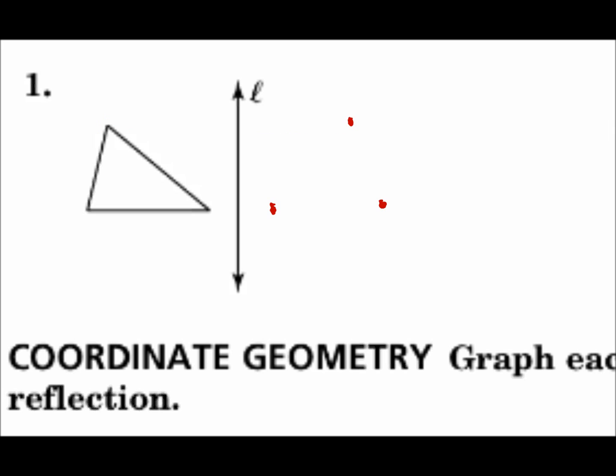Now you've got your three points. Go ahead and connect the dots. And you now have a mirror image of the first triangle. Remember, the first one is the pre-image. And the new one is the image.